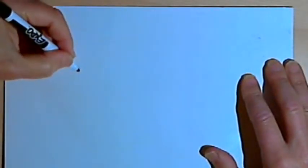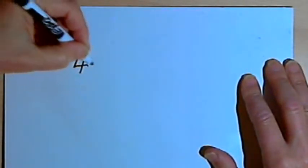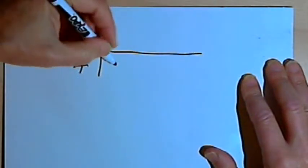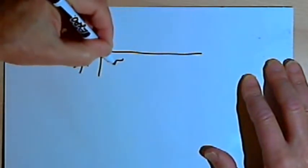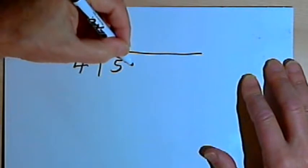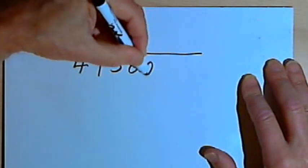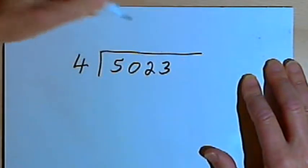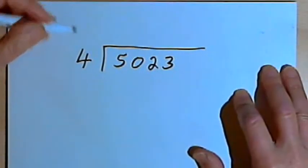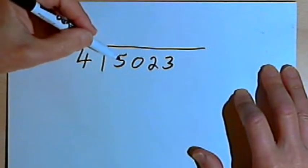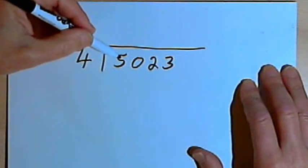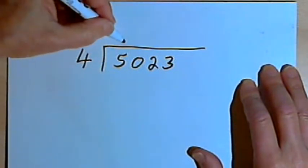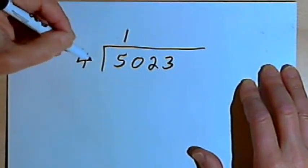So, I don't know, let's divide by 4. And I'll divide 4 into 5,023. So 4 divides into the first digit, 5, and it divides 1 times, so I'll have a 1.